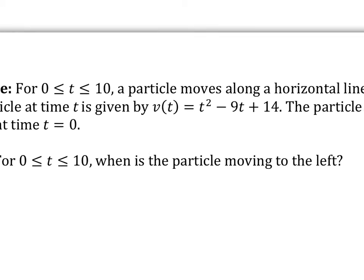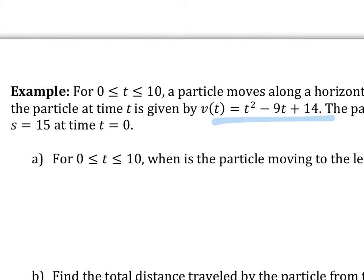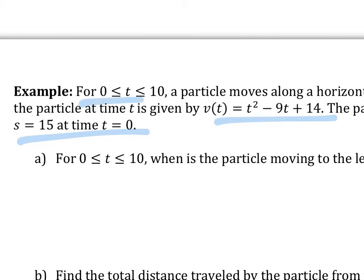And then there is an initial position at t equals 0 equals s of 15. So you want to just write down these important parts: velocity, initial condition, and interval.